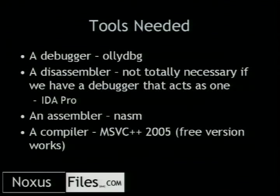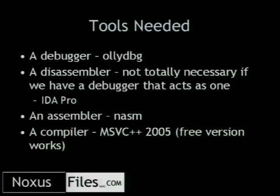The tools needed to do this: you need a debugger — OllyDBG is my choice, many people prefer WinDBG, that's fine. A disassembler isn't totally necessary if you have a debugger, but IDA Pro is a good choice. An assembler — I prefer NASM, and that's what the Metasploit Payload Development Kit uses. And you're going to need a compiler also — I chose Microsoft Visual Studio C++ 2005. The express version works and it's free, so you can go home and compile my code and run it.